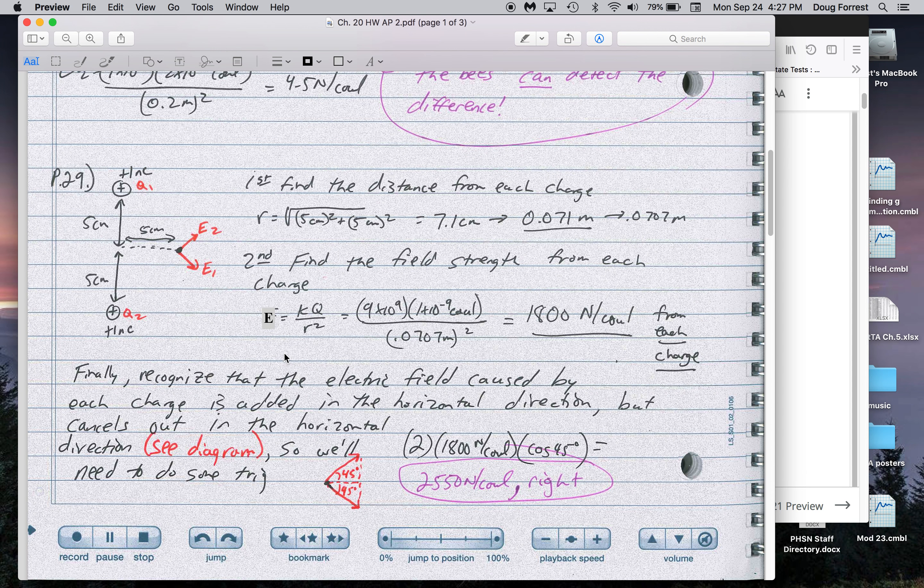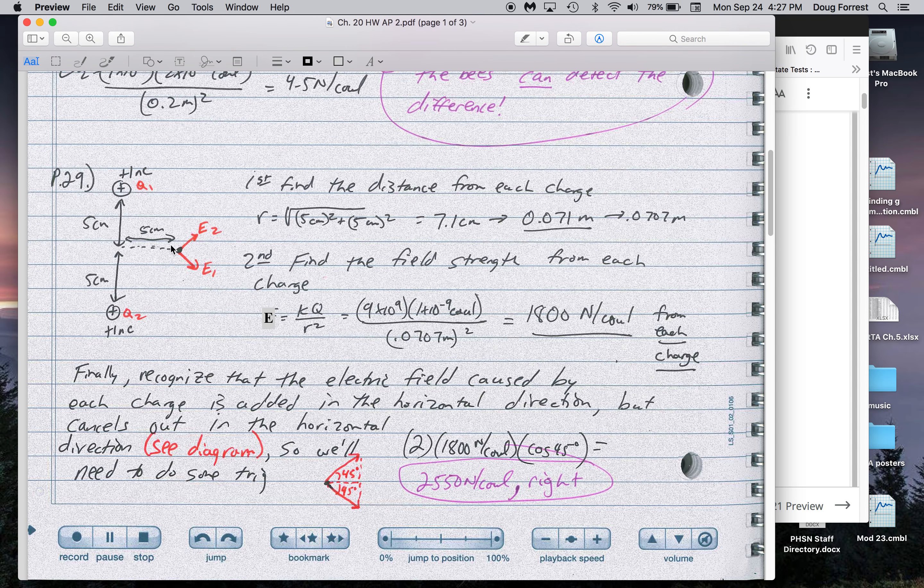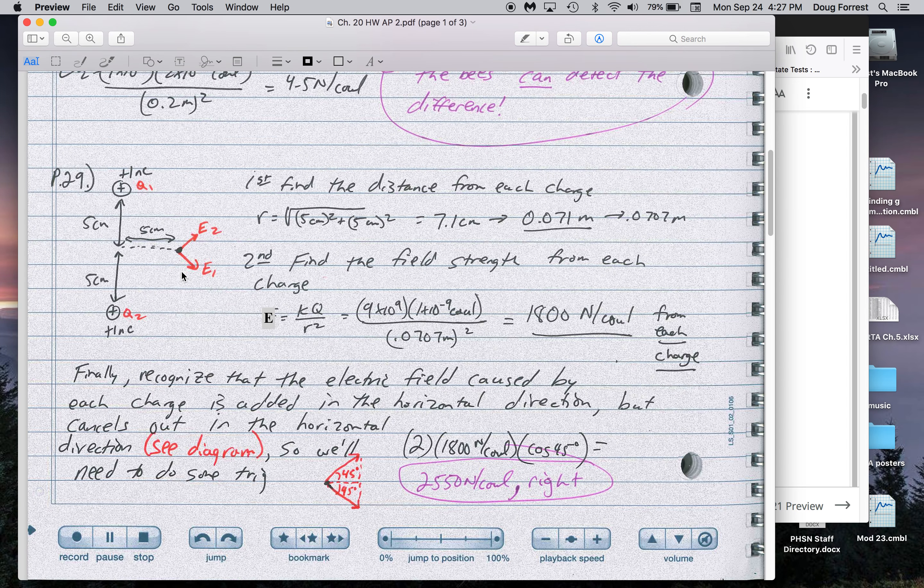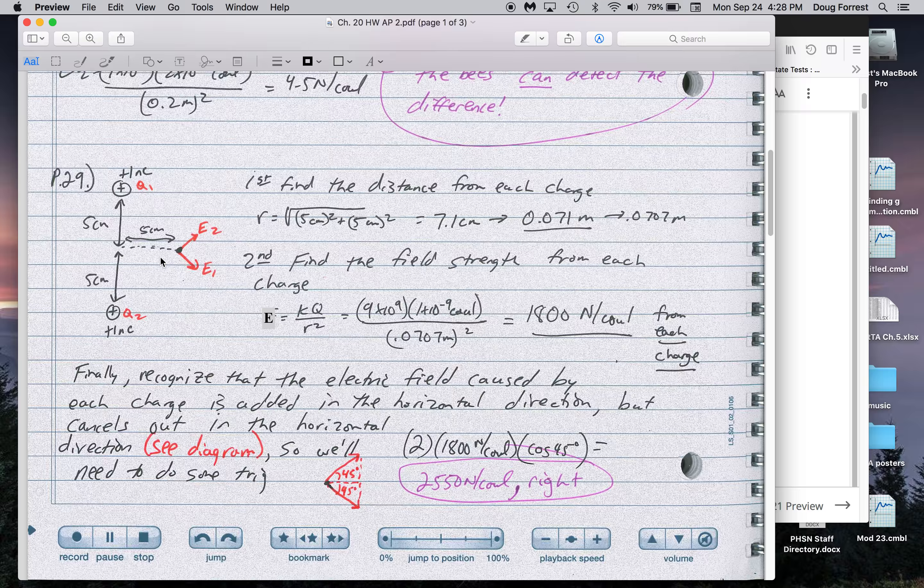And that equals, we went over this one in class. So basically we have to recognize that the electric field is caused by the two charges which are pointing in different directions. The horizontal part of those electric fields will add up vectorially and the vertical parts will cancel out. So the first thing I did is get the electric field at that distance. The distance from either of these charges is 7.1 centimeters.